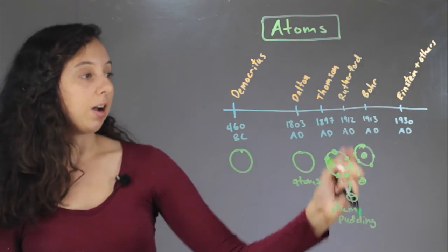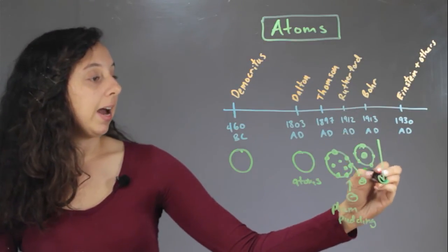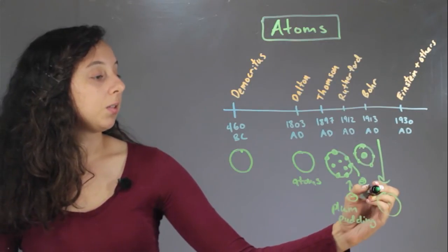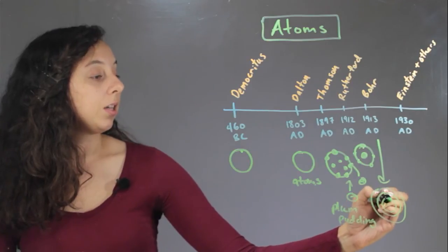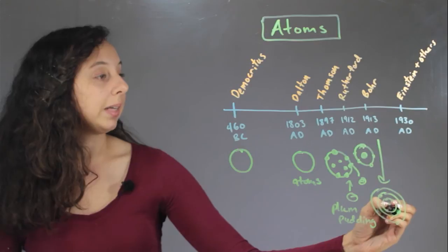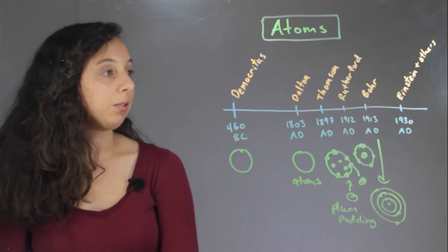And so Bohr answered that question. He basically laid out a bunch of rules for electrons, saying that there's a nucleus, and there's many subshells of electrons, and that they all can only rise and fall according to certain rules, and they all have their own places. And so that was the Bohr model.